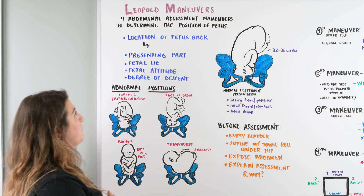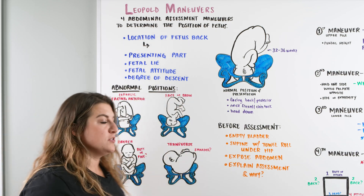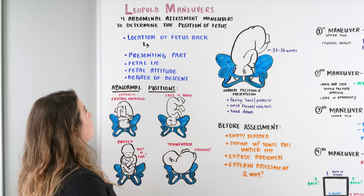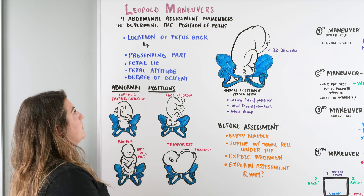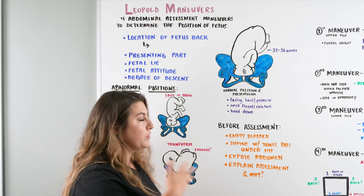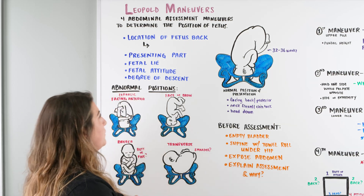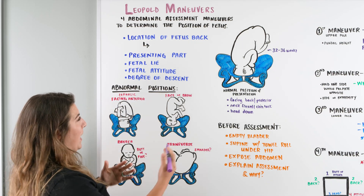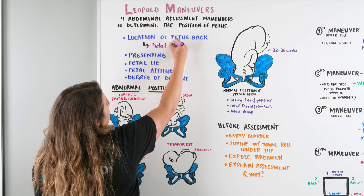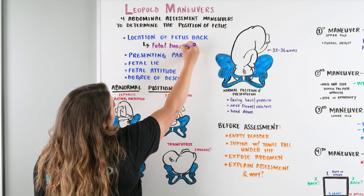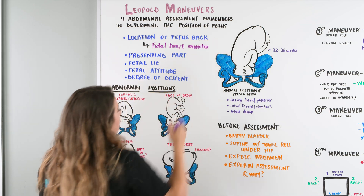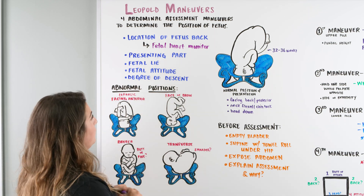Leopold maneuvers are the maneuvers that we're going to be using to assess the positioning of the fetus within the belly. There are four abdominal assessment maneuvers that we use to determine the position of the fetus. The real point of this is to make sure that the location of the fetus's back is somewhere where we can put the fetal heart monitor, because we're going to be putting that on the back of the baby in order to assess the fetal heart rate.